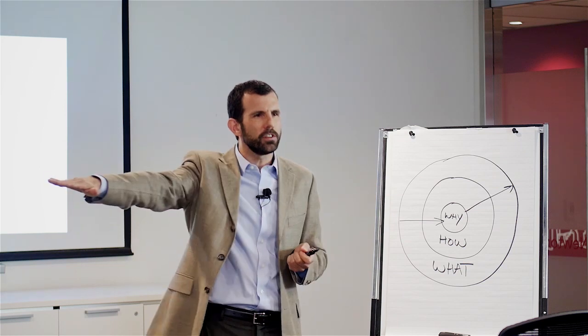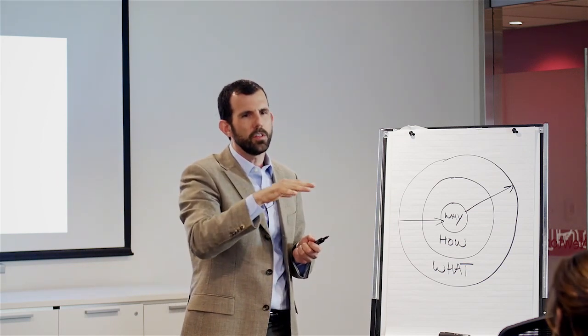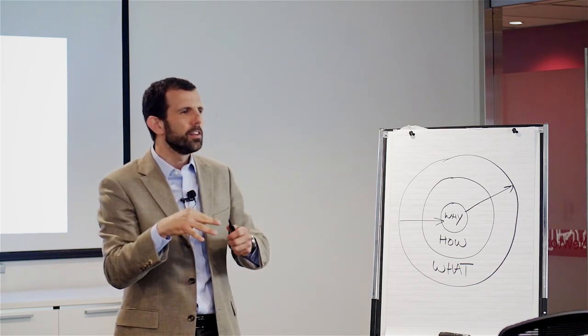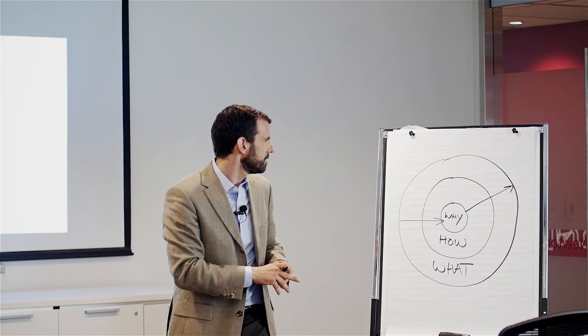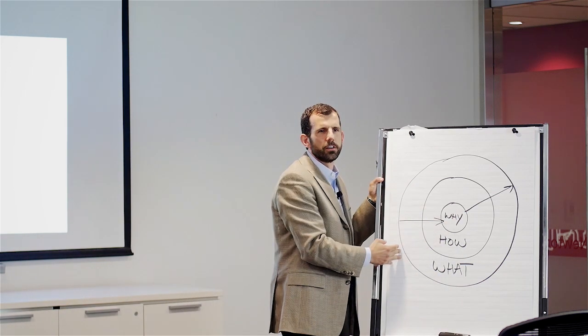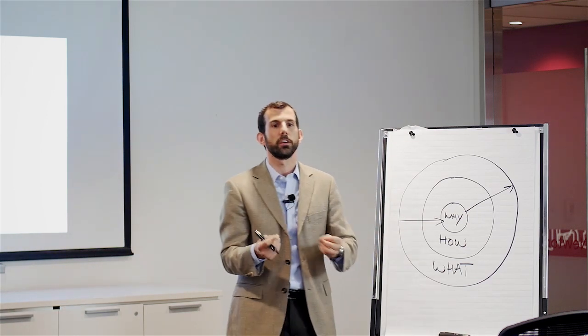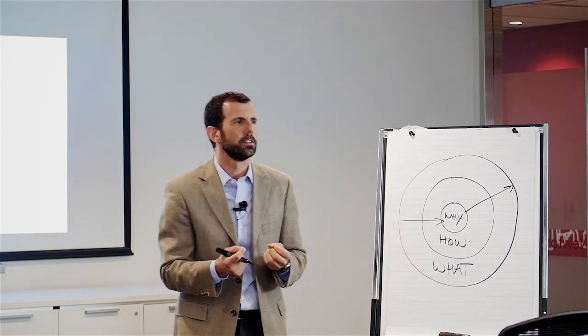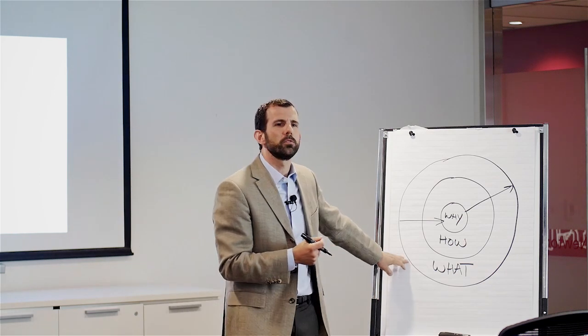If you take a cross section of the human brain and look from the top down, you'll see that the brain is divided into three major regions. And they correspond with the golden circle, our three layers here. The outer region, our neocortex, our newest brain.